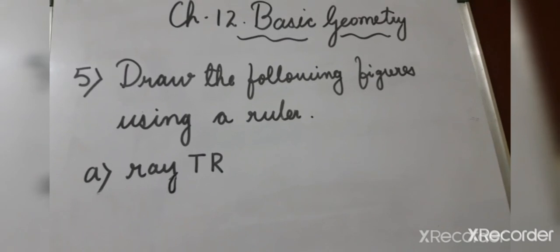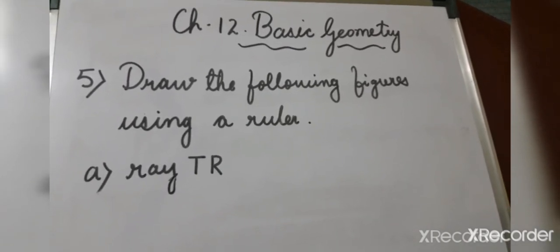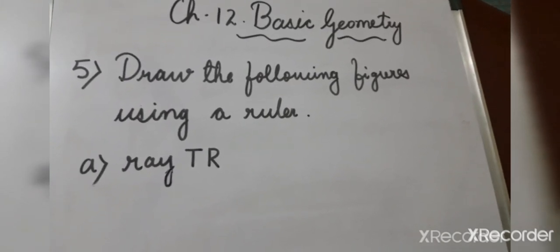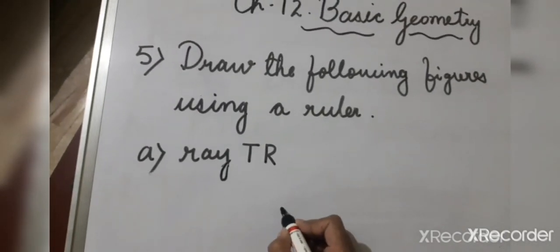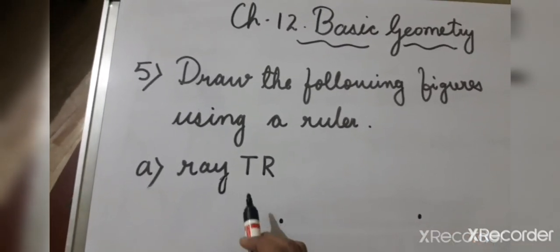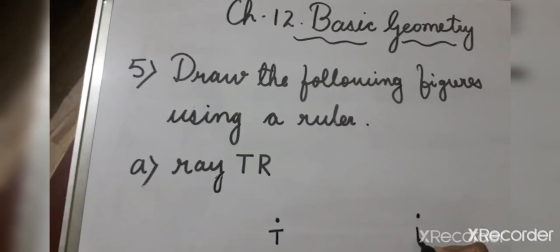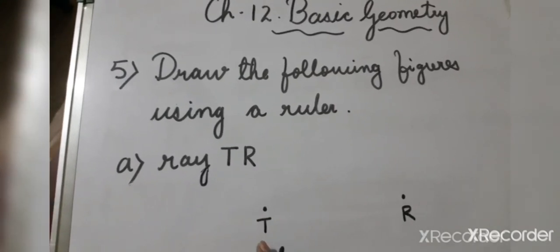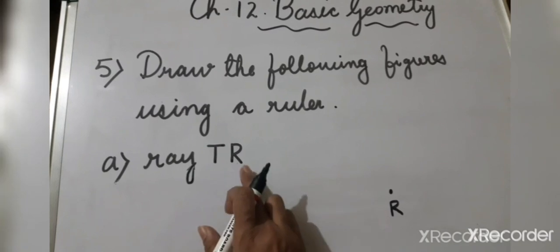Children, question number 5 is: draw the following figures using a ruler. Question number A is ray TR. Here we have to draw ray TR. First, we will draw 2 points and give them the names point T and point R, because we have to draw ray TR. So we are going to first draw 2 points, that is point T and point R.